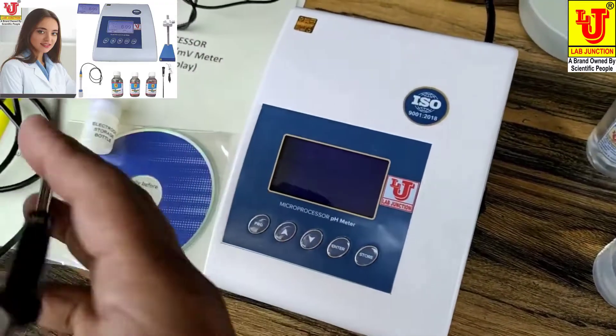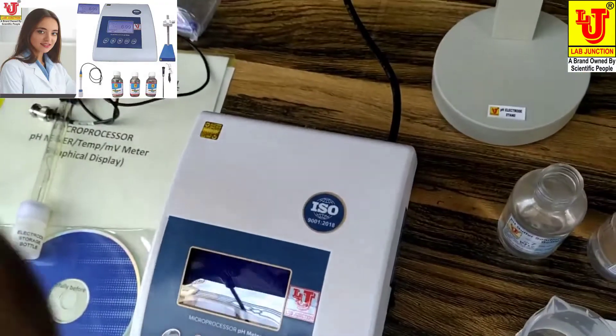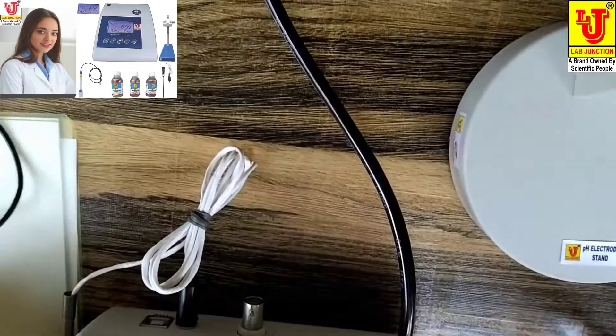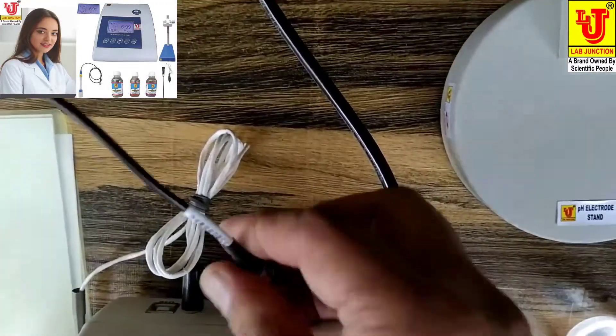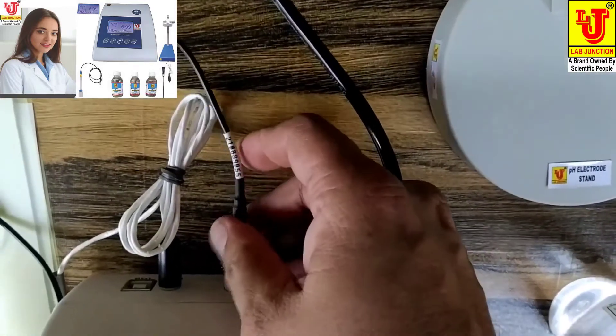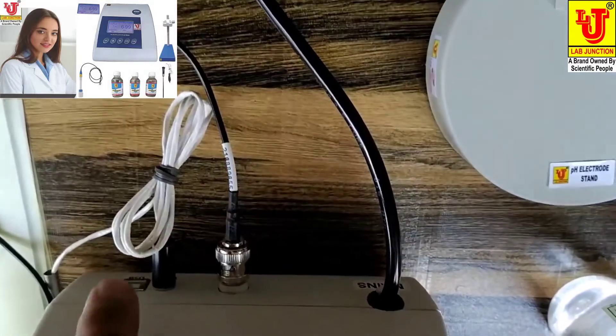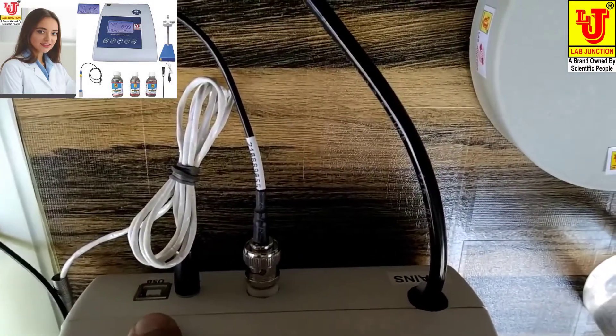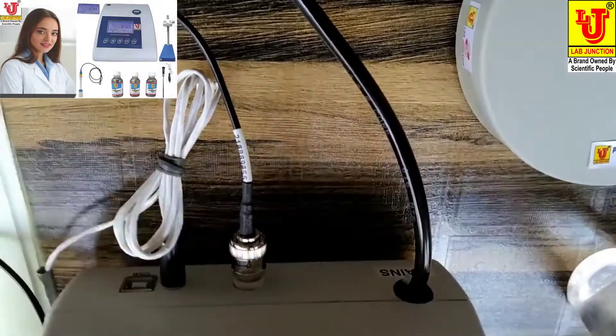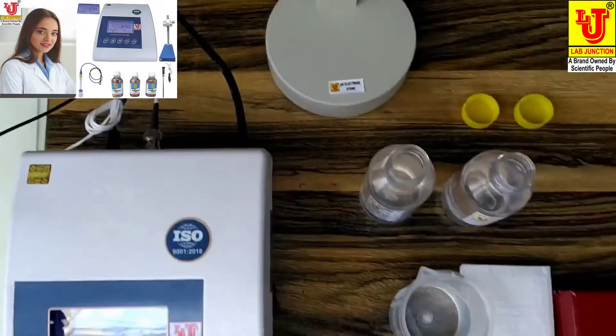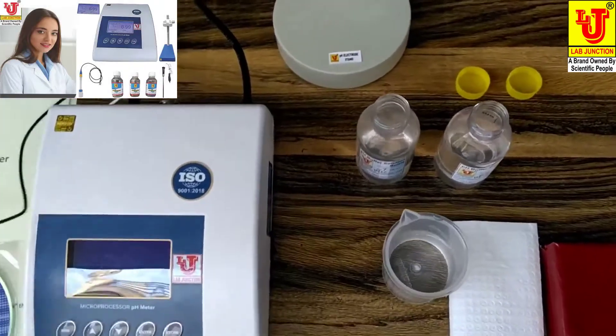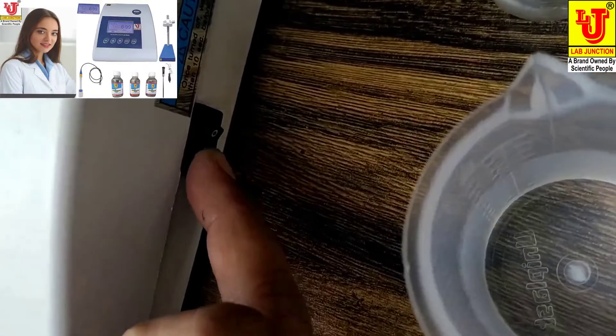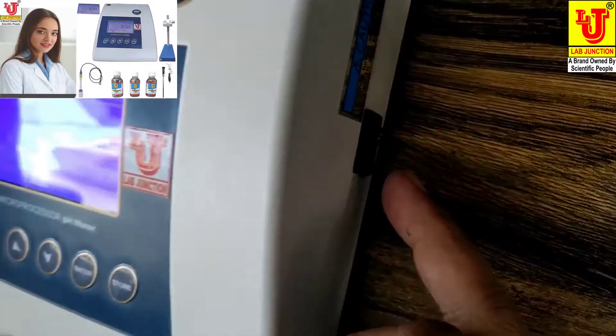First I have to mount the temperature sensor to the pH meter and pH electrode to the pH meter. This slot is for USB interfacing with PC attachment, and this is the main cord. And this side of the pH meter, there is an on-off switch. You can switch it on like this.